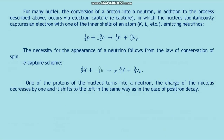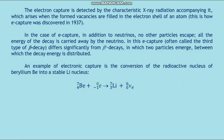For many nuclei, the conversion of a proton into a neutron also occurs via electron capture (E-capture), in which the nucleus spontaneously captures an electron from one of the inner shells of the atom (K, L, etc.), emitting a neutrino. The necessity of neutrino emission follows from the law of conservation of spin. In this process, one proton of the nucleus turns into a neutron, the nuclear charge decreases by one, and the nucleus shifts left in the periodic table — the same as in positron decay.